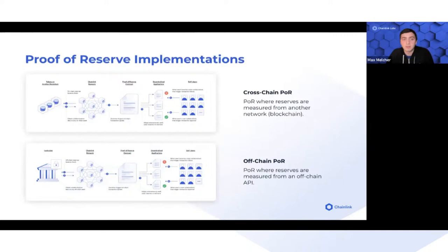This is where Chainlink Proof of Reserve comes into play. We categorize it by two different implementations: cross-chain proof of reserve, which is the ability for the Chainlink node network to pull reserve verification from another blockchain, and off-chain proof of reserve, which leverages auditors and custodian accounts to verify the collateral.